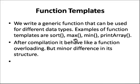Function template: we write a generic function that can be used for different data types. Function templates can be of any type — for example, sort, max, min, print array. We can make them templates for sorting integer arrays, float arrays, or character arrays. After compilation, it behaves like function overloading, but with minor differences: in function overloading, the type, number, and order of arguments are considered, with no return type checking. But in templates, after compilation, the complete function signature including argument and return type is checked.